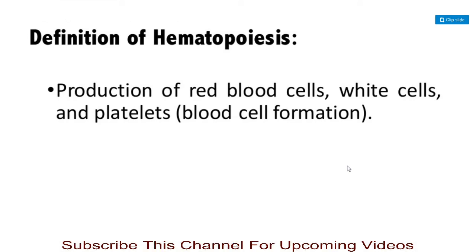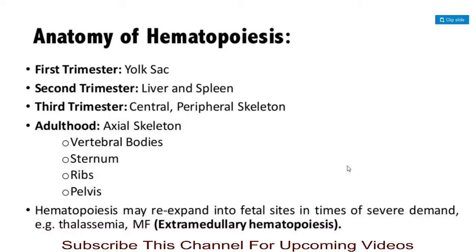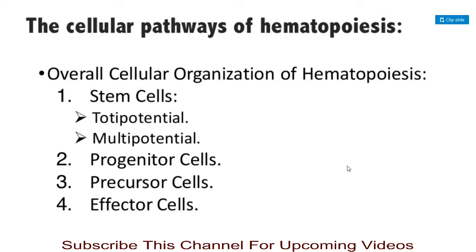The definition of hematopoiesis is: it is the formation or production of red blood cells, white blood cells, and platelets, which are also called thrombocytes. In short, hematopoiesis is nothing but the formation of all types of blood cells. Next is the anatomy of hematopoiesis.